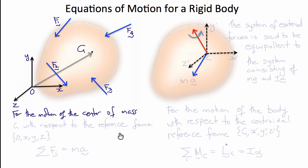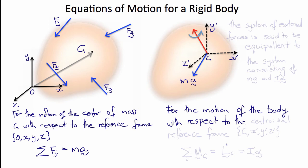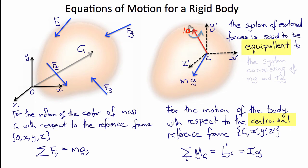Newton's laws tell us that for the motion of the center of mass G with respect to the reference frame, the sum of the forces must equal the mass of the body times its acceleration. It is useful to define a new reference frame with its origin at G — we'll call it x-prime, y-prime. For the motion of the body with respect to this centroidal reference frame, the external forces also give rise to moments about G, whose sum equals the rate of change of angular momentum L-dot about G, which equals I — the moment of inertia — times the angular acceleration alpha. This system of external forces is therefore equivalent to the system consisting of ma and I-alpha.